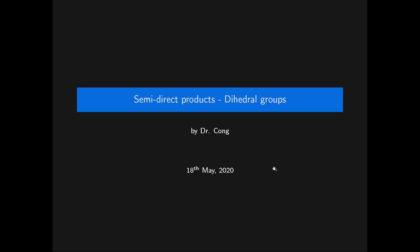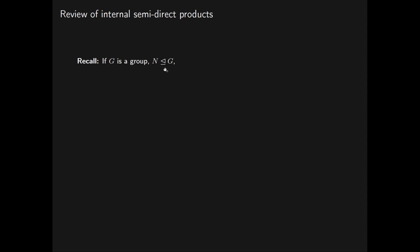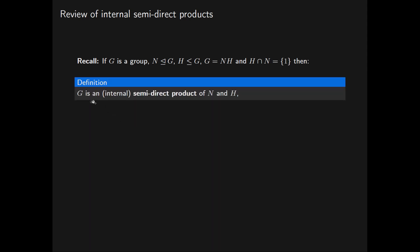Let's quickly review the theory on internal semi-direct products. Recall that if G is a group, N is a normal subgroup of G, H is a subgroup of G, and G equals NH, and the intersection of H and N is the trivial subgroup, then G is an internal semi-direct product of N and H.